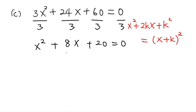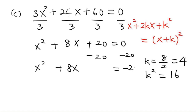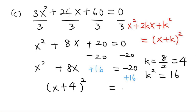Now, the value of k is half of 8, which is 4. And k squared is 16. We have 20 but we want 16 to make a perfect square, so we subtract 20 from both sides, giving negative 20, then add 16 to both sides. We now have a perfect square on the left: x plus 4, squared, equals negative 20 plus 16, which is negative 4.